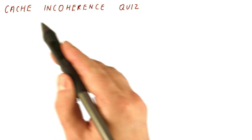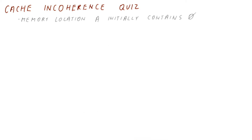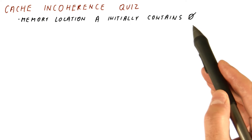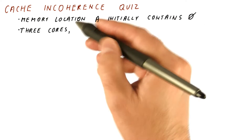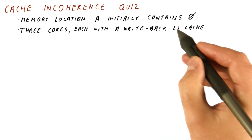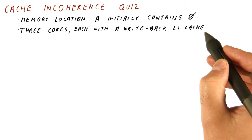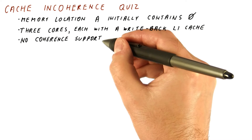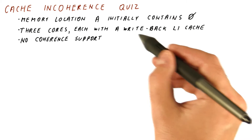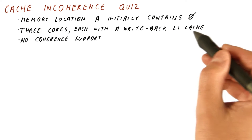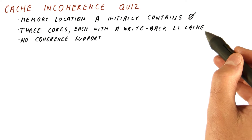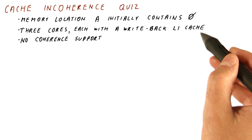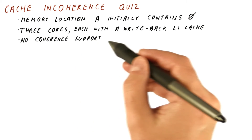Let us see if we understand how caches can become incoherent. Suppose that we have a memory location A that initially contains a zero value. In this system we have three cores. Each core has its own write-back L1 cache, and these write-back caches do not have any coherence support. This means they simply behave as if each cache was alone in a uniprocessor — they behave correctly for a uniprocessor cache, but they do not try to maintain coherence.